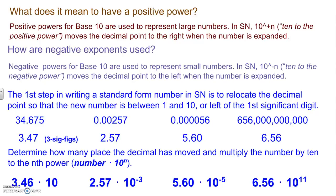So 3.46 times 10, I apologize, 3.47 it should be, times 10, 2.57 times 10 to the negative 3, 5.60 times 10 to the negative 5, 6.656 times 10 to the negative power. Let's continue.